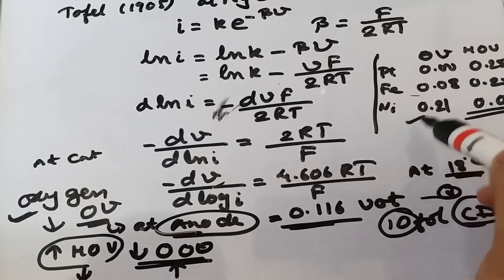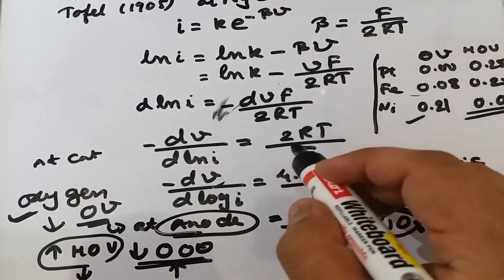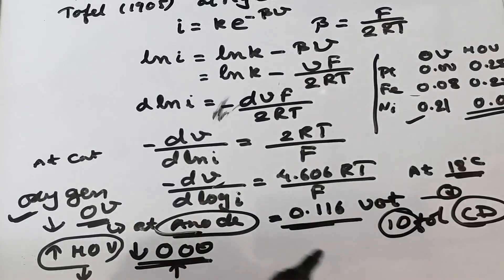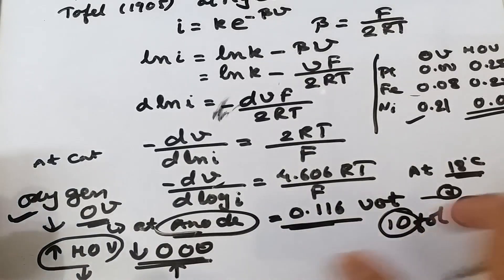For nickel, the oxygen overvoltage is 0.21 and the hydrogen overvoltage is 0.06. So metals with lower oxygen overvoltage have higher hydrogen overvoltage, and metals with lower hydrogen overvoltage have higher oxygen overvoltage.